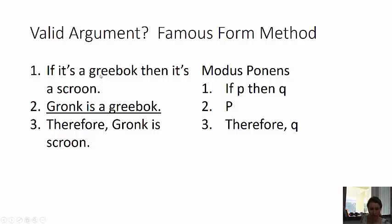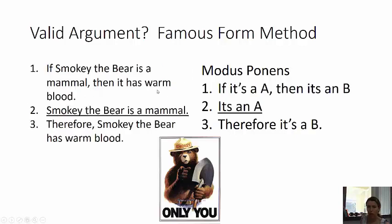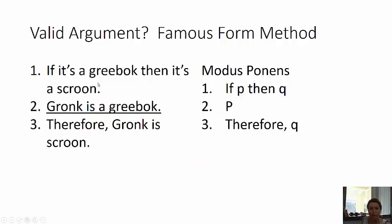Here's an example using made-up words — greebok for A and skroon for B. If it's a greebok, then it's skroon. Gronk is a greebok, therefore Gronk is skroon. So if P then Q, P, therefore Q. We made up nonsense words, plugged them in, and it's still valid.